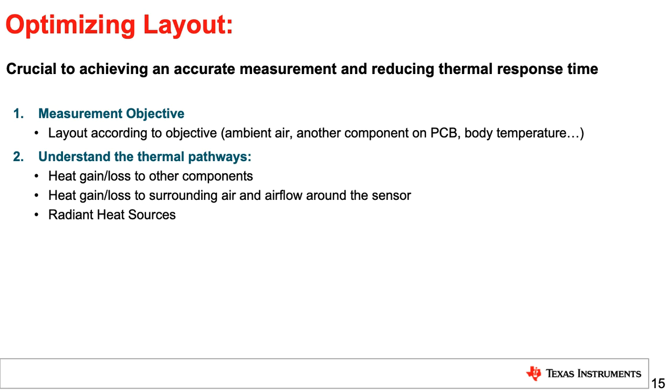Second, understand all the thermal pathways around the sensor. This means looking at all the conductive paths where heat is gained or lost through PCB traces, the ground plane, or the board material itself. It's also important to think about the airflow in the system. Even without an active fan moving air, heat from other circuitry will generate convective air currents which could draw heat towards or away from the sensor. Often overlooked is the impact of radiative sources. Even a hot heat sink on the opposite side of the system will contribute to heating the temperature sensor if there is line of sight.